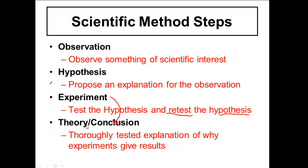Anything known as a theory — like the Big Bang Theory or the theory of evolution — is what we call a thoroughly tested explanation. That means many, many experiments have been done to try to explain why we get these results. So once again: start with number one, making an observation of scientific interest.